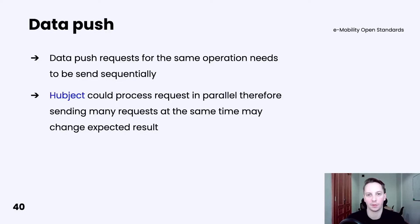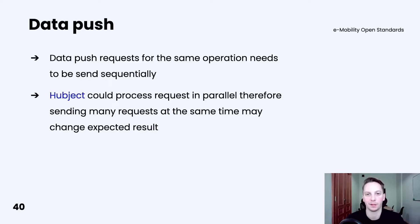One of the most important things to remember about OICP protocol is that data push requests for the same service operation need to be sent sequentially. For example, if you push EVSE data in a few requests, make sure they are being executed one by one after a response from the server is received. The reason is that Hubject can process those requests in parallel, so sending many requests at the same time may change the expected result or even unintentionally override the dataset.